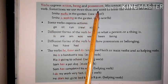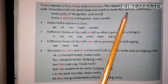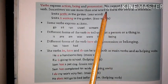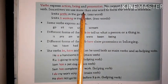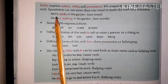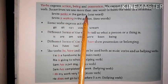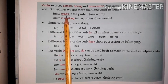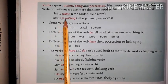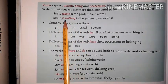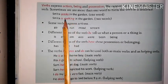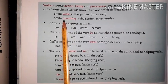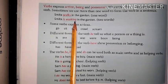Sometimes we use more than one word to form the verb in a sentence. For example: 'Samitha walks in the garden' — here there is only one verb: walk. But 'Samitha is walking in the garden' — here there are two verbs: is and walking. 'Is' is the helping verb and 'walking' is the main verb.